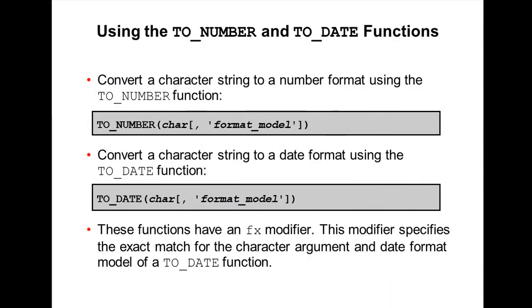Now I'm going to explain the TO_NUMBER and TO_DATE functions. To convert a character string to number format, use the TO_NUMBER function. What is the basic syntax? TO_NUMBER - the first argument is char.